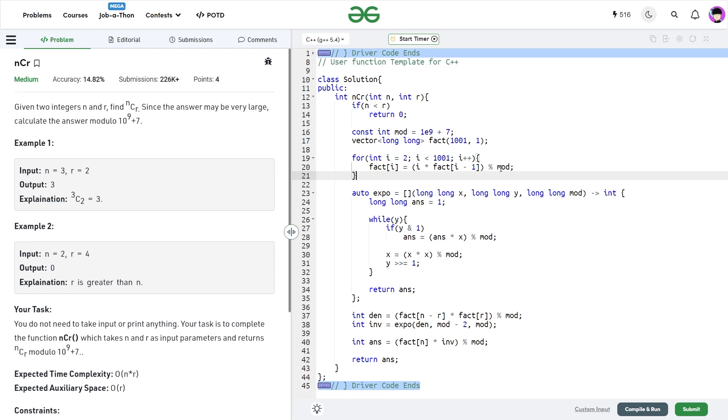At the end we'll discuss this exponentiation function, but what I do is I calculate the denominator value: fact of n minus r into fact of r, then taking its mod. Then calculating the inverse of this particular value, that is the inverse of the denominator, using the exponentiation function. It is receiving three arguments: the denominator raised to the power mod minus 2 and the mod value itself.